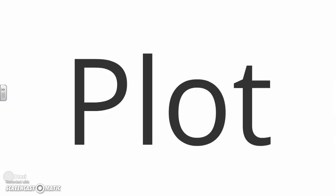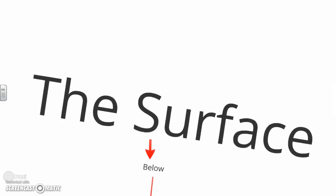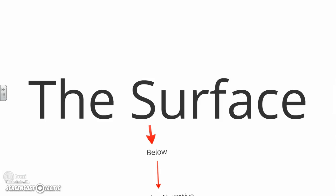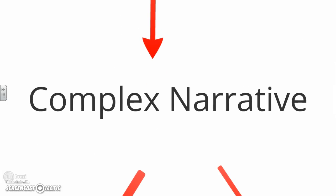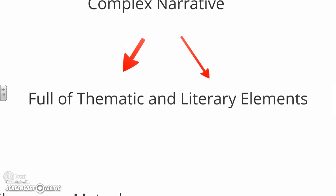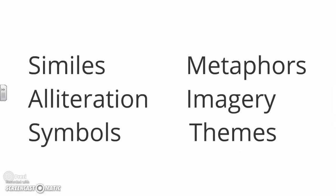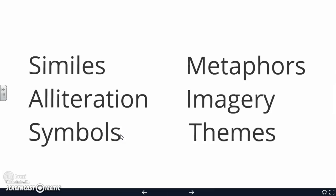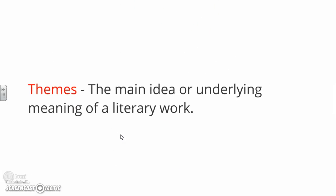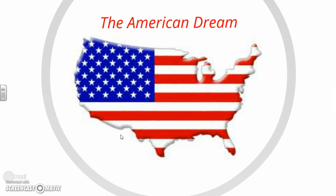Now we're going to look at the novel. This is fiction, and we're going to start preparing you for next year, which is AP Literature — all fiction and poetry. So I'm throwing one fiction novel in this year to help in that preparation. Main things we're going to look at: the plot diagram, rising action, climax, and resolution. But because this is an AP class, we're not just looking at the surface — we're going below the surface to look at the complexities of the narrative, focusing on thematic and literary elements: similes, metaphors, alliteration, imagery, symbols, and themes. Be prepared for symbols — I have tons of them from this novel and love to test on symbols.